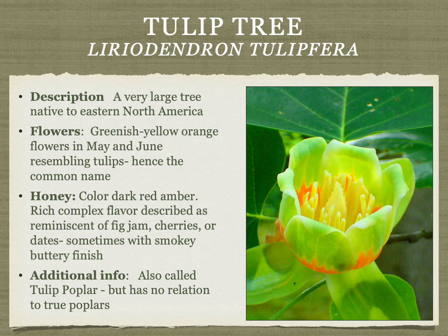Tulip tree is one of the largest trees in the eastern North American woodlands, and bees in the East certainly make some of this honey. The color is dark red amber, rich and complex, with dark fruit and cherries, sometimes with a smoky or buttery finish. Another common name is tulip poplar, but it has no relationship with true poplars, cottonwoods, aspen, or other poplars.